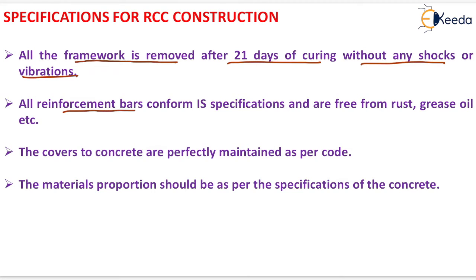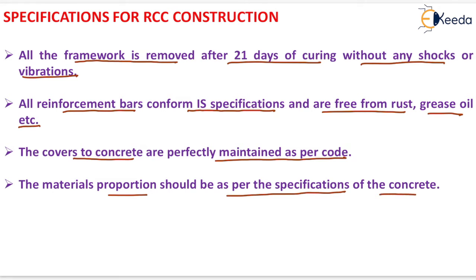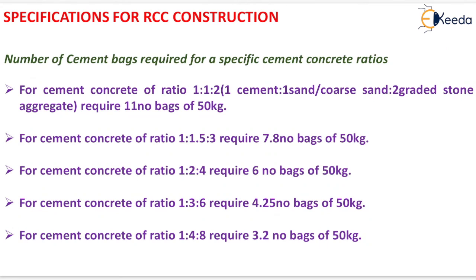All reinforcement bars confirm Indian standard specifications and are free from rust, grease, oil, etc. The covers to concrete are perfectly maintained as per the code. The material proportion should be as per the specification of the concrete. For cement concrete of ratio 1:1:2, 11 bags of 50 kg are required. For ratio 1:1.5:3, 7.8 bags of 50 kg are required.